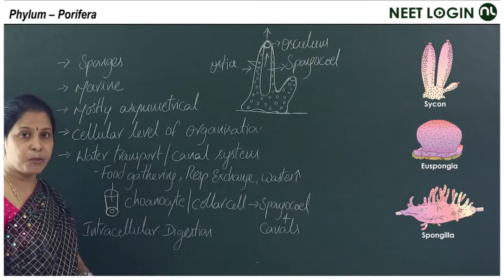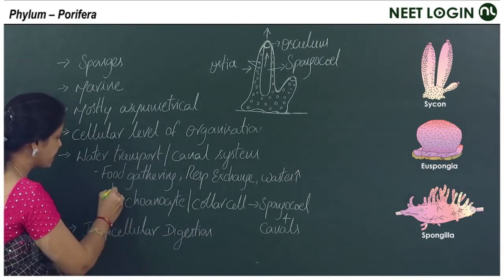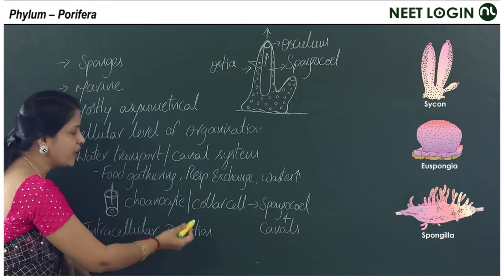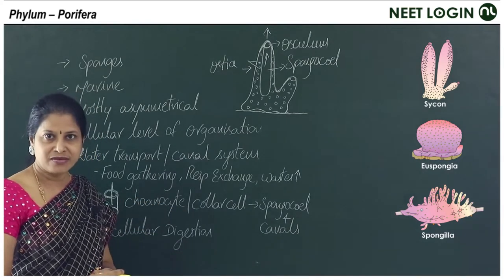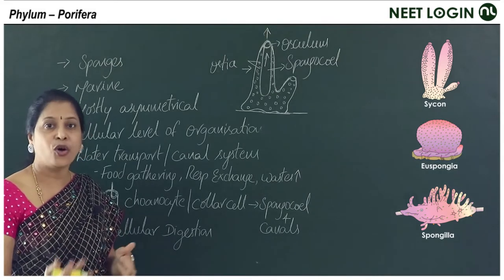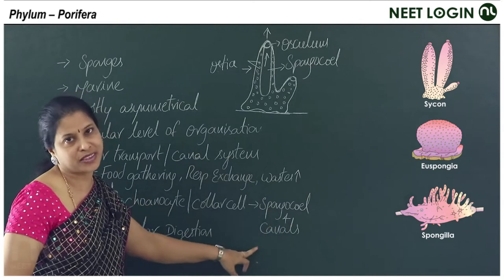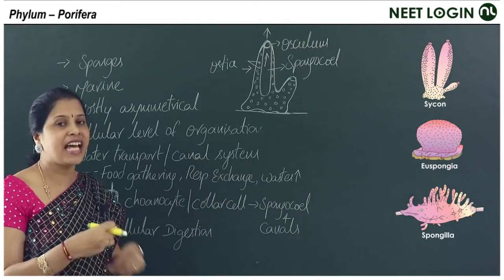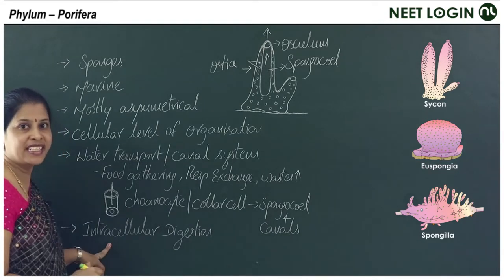The next important feature is choanocytes, or collar cells. They have a collar-like structure with a flagellum. The choanocytes line the spongocoel and canals. This is a common NEET exam question: which cells line the spongocoel? The answer is choanocytes or collar cells. The spongocoel is the cavity of the sponge. Digestion is intracellular — it occurs inside the cells.